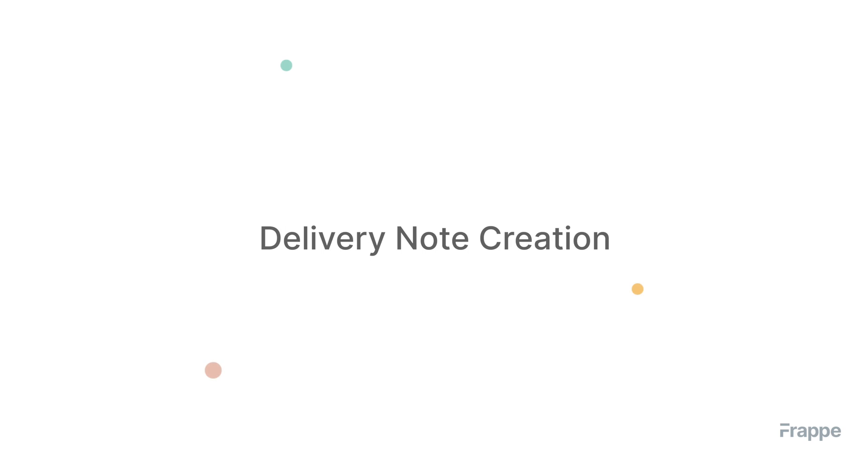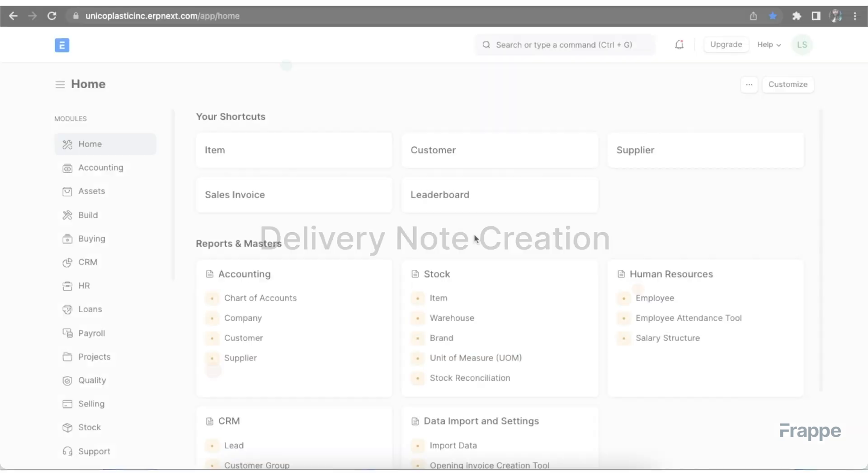A delivery note is also helpful to record partial deliveries. A packing slip is a document that is sent in each package or box being delivered. It shows the contents of a package, including the quantity and weight of items being sent in the package or box. Let's see how to create delivery notes and packing slips in ERPNext.